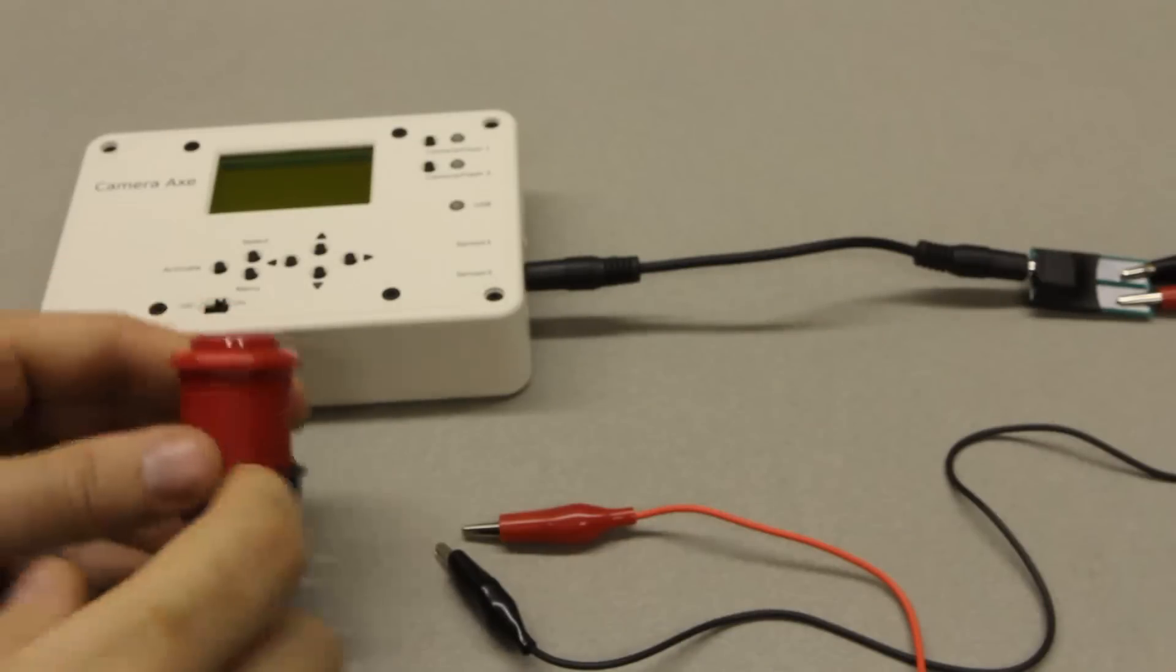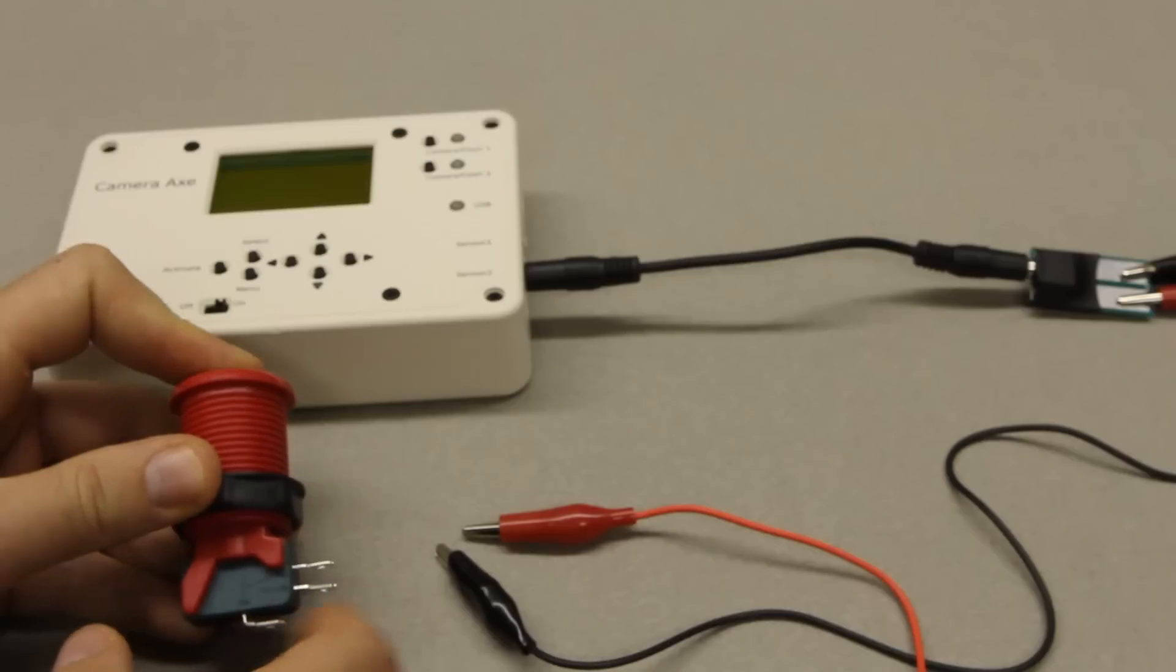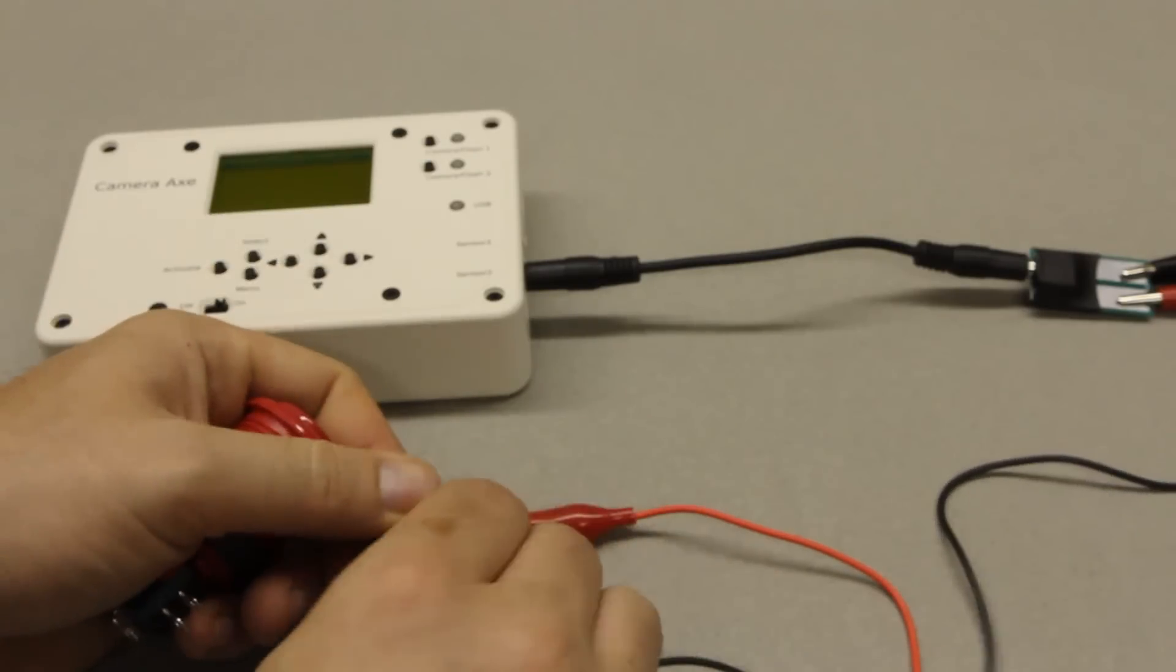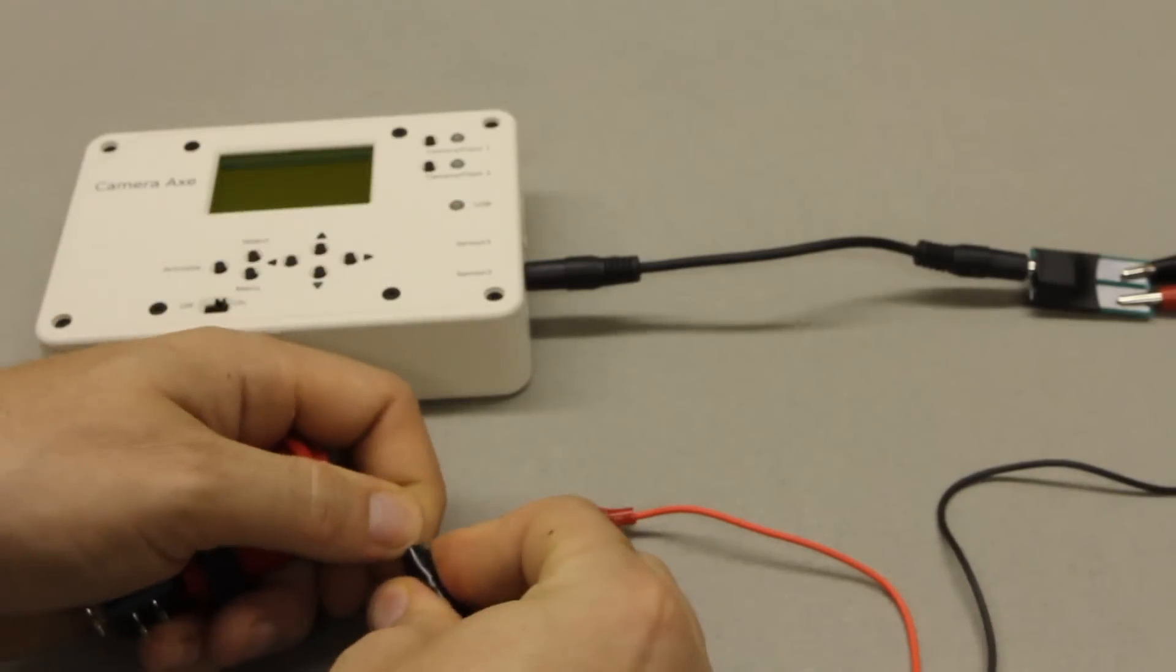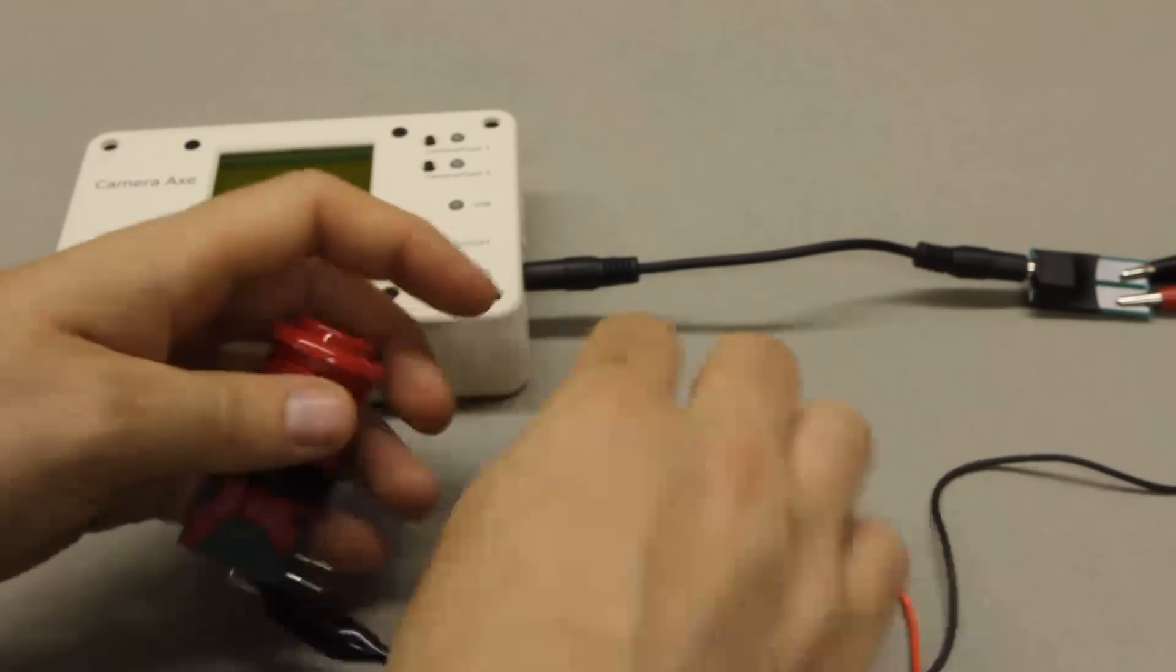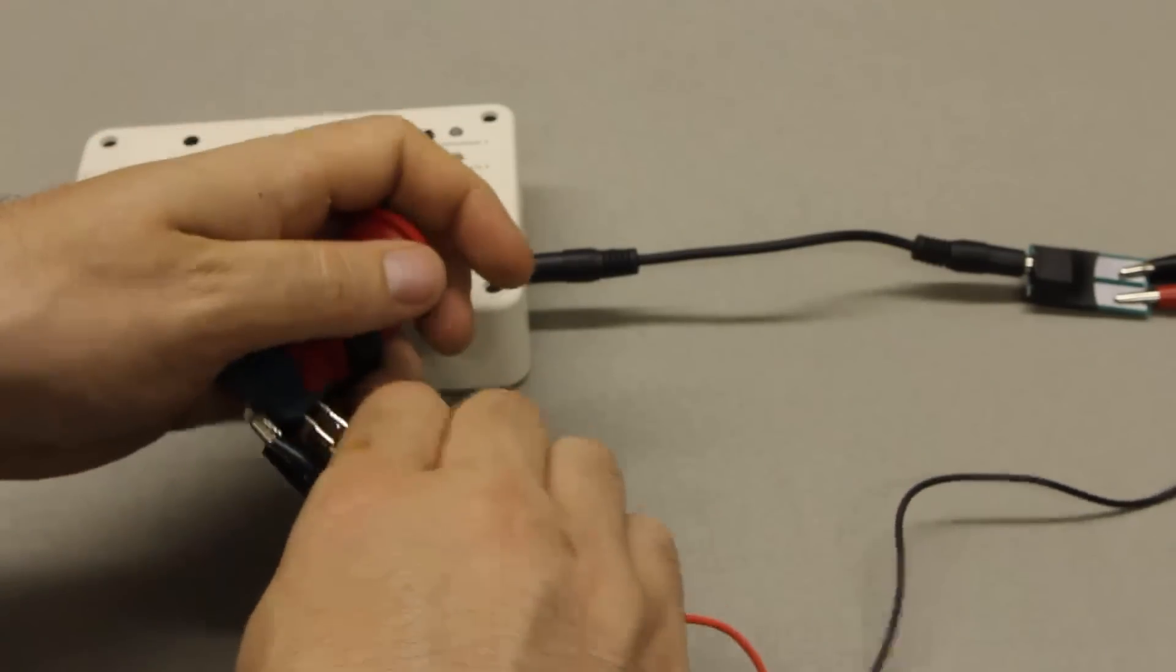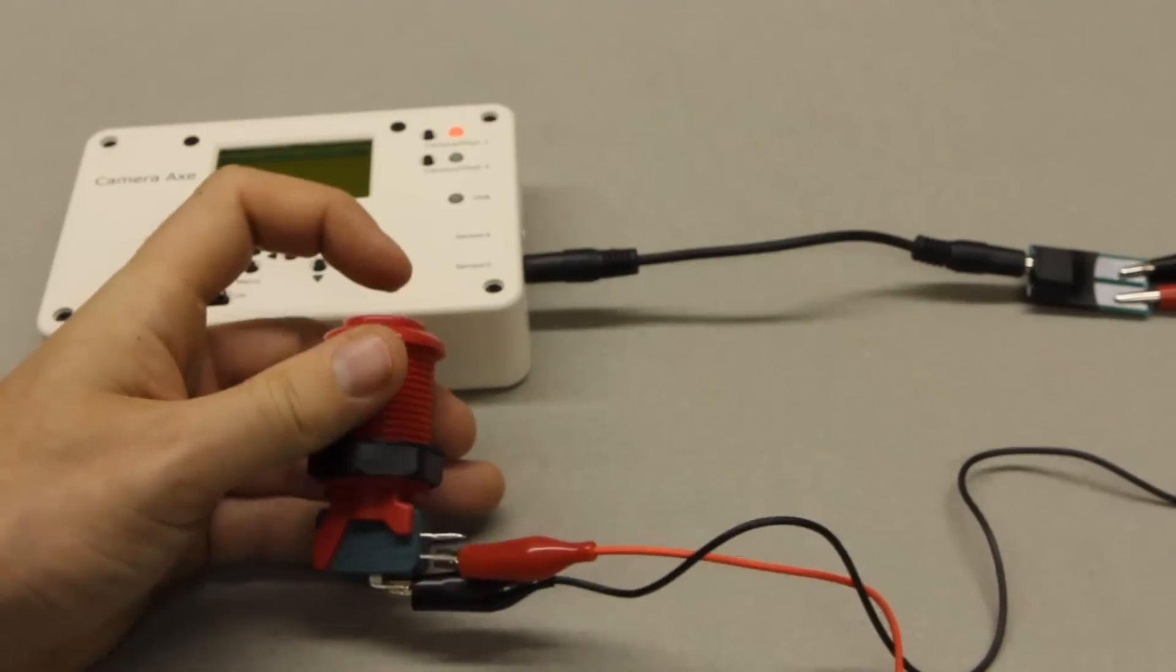Another neat example is simply a button. The way a button works is when you press it down, it creates a short between the two contacts. In order to hook up a button to the camera axe, all you need to do is clip the alligator clips to the different leads on a button. When you press it, you get an activation like that.